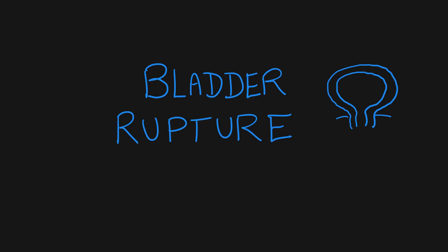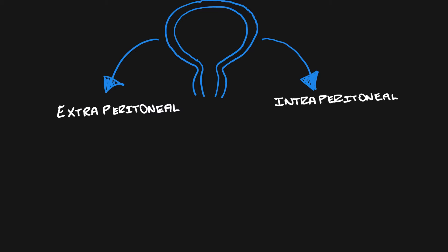In this short video, we're going to cover the two types of bladder rupture: extraperitoneal and intraperitoneal.